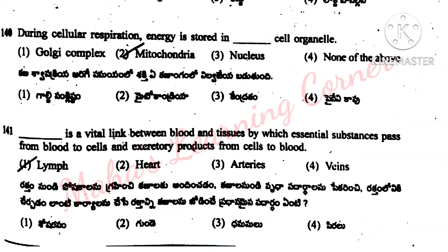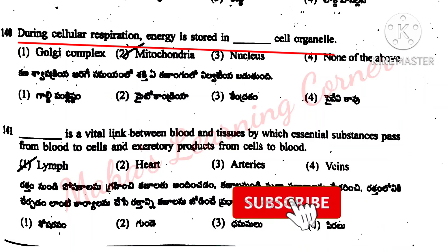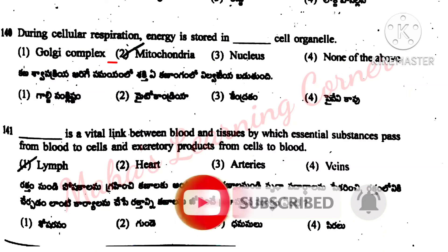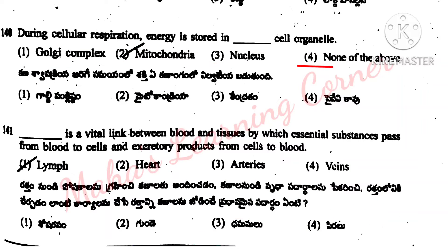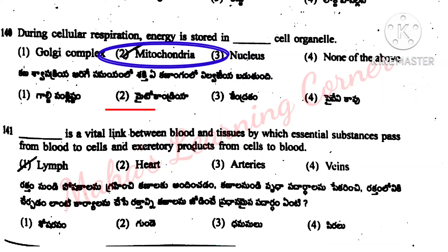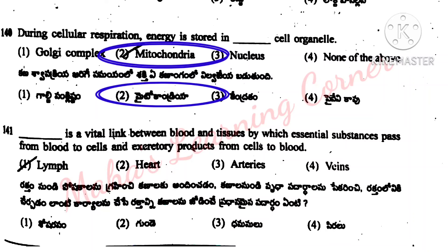During cellular respiration, energy is stored in dash cell organelle: Golgi complex, mitochondria, nucleus, none of the above. Correct answer is option 2: mitochondria.